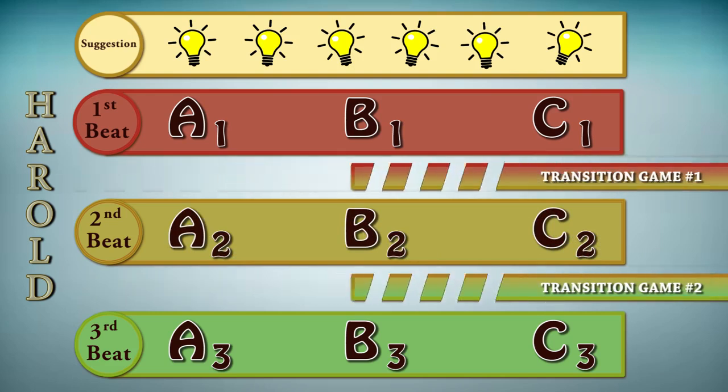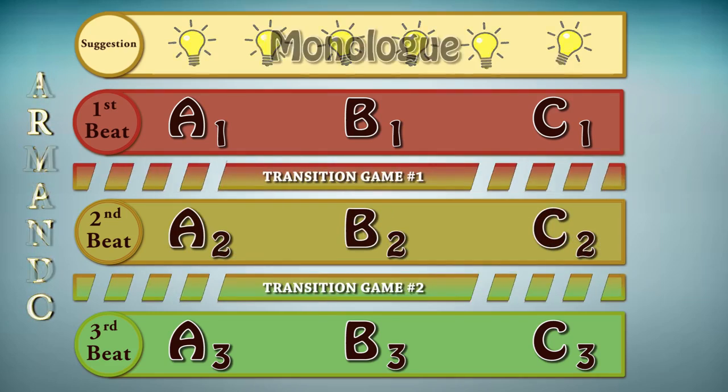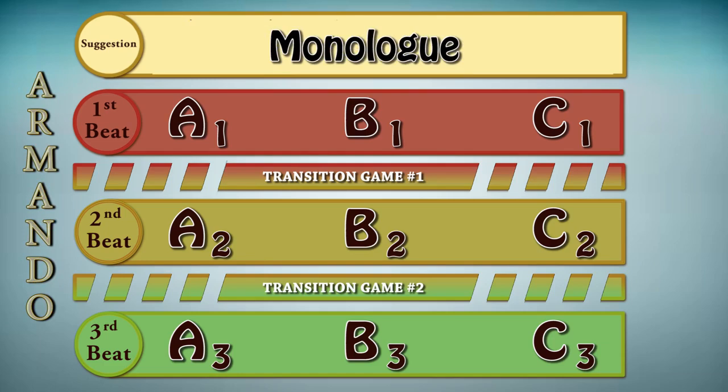If you remove the intermission games, it's called a triptych. If you start with a monologue, it's an Armando — but it's still the philosophy of the Harold. So you should see this format as a family of formats with roughly the same structure, trying to explore a theme through different stories. That's what makes it so great: it's a very versatile format, so it's never twice the same Harold.